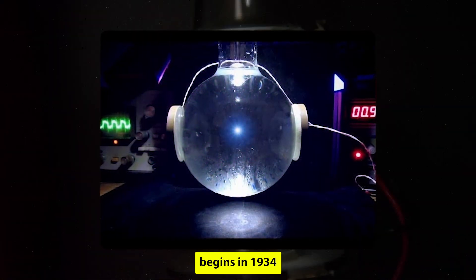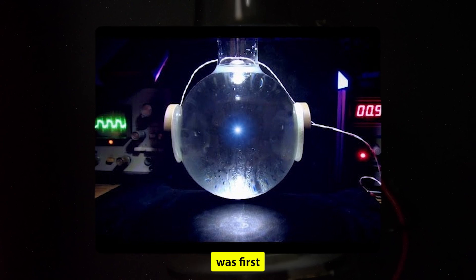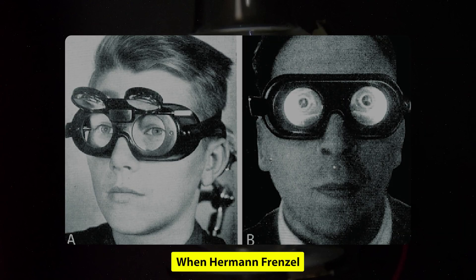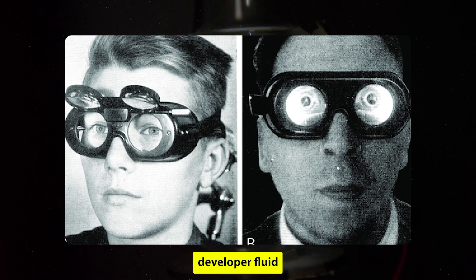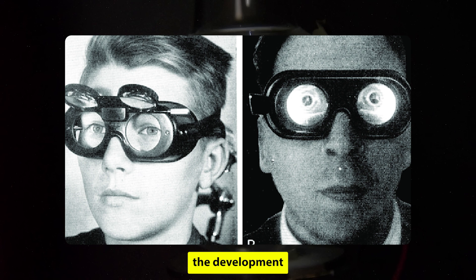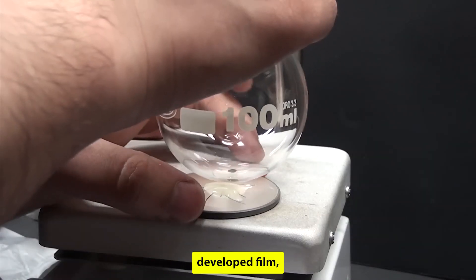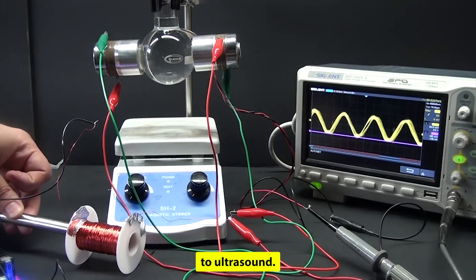The story of sonoluminescence begins in 1934 at the University of Cologne, when the effect was first discovered as a result of work on sonar. When Hermann Frenzel and H. Schultes placed an ultrasound transducer in photographic developer fluid, intending to hasten the development process, they unexpectedly observed minuscule dots on the developed film, realizing that bubbles in the fluid emitted light when exposed to ultrasound.